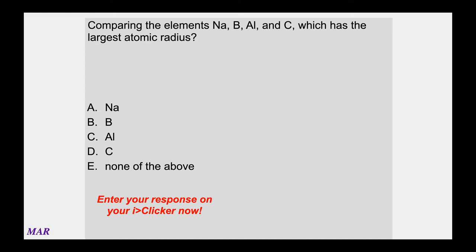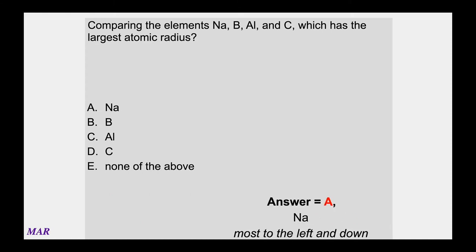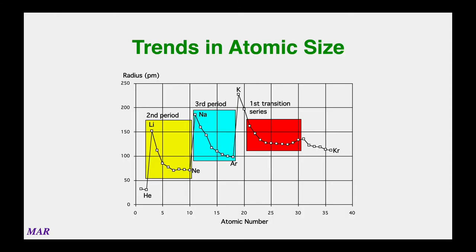If you compare sodium, boron, aluminum, and carbon — which has the largest radius? You want the atom that is most left and down. I won't give you questions where one element is more left and another is more down — that would be dirty poker. For this question, sodium is clearly the most left and down, so sodium is biggest. Probably sodium, then aluminum, then boron, then carbon would be smallest.